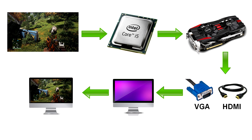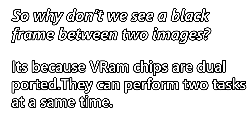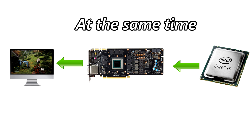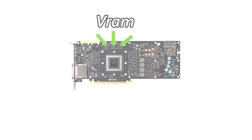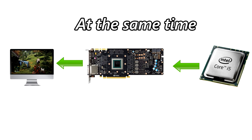This process occurs so quickly that we don't notice any flickering between frames. So how does VRAM prevent flickering between two images? It's because unlike normal RAM, VRAM chips are dual ported — meaning they can perform two tasks at the same time. While the display is reading from the VRAM to show the current image, the processor is already writing a new image to the VRAM. So before the current image finishes displaying, the VRAM already has new frames ready for the monitor, putting up a frame and rendering a new one simultaneously.